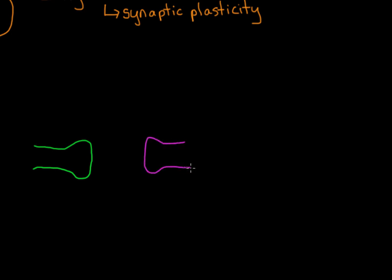Neurons communicate using electrochemical signals. That means a combination of electricity and chemicals. When neurons communicate, they actually don't connect to each other directly. There's a junction in between called the synapse.